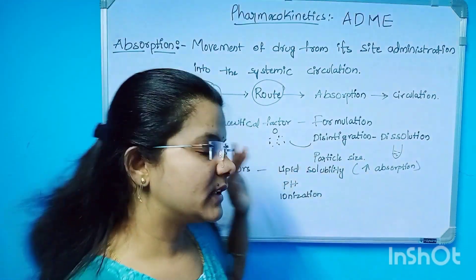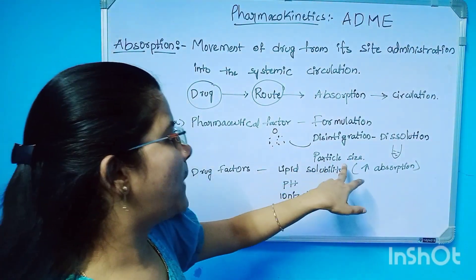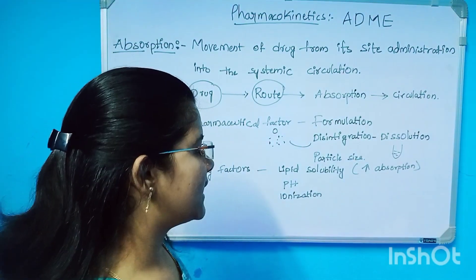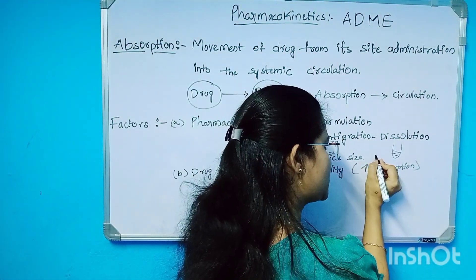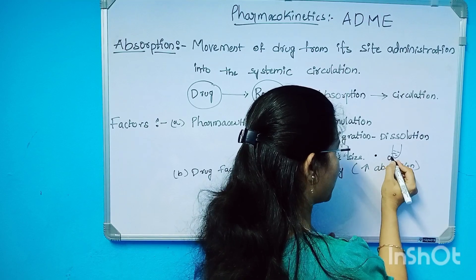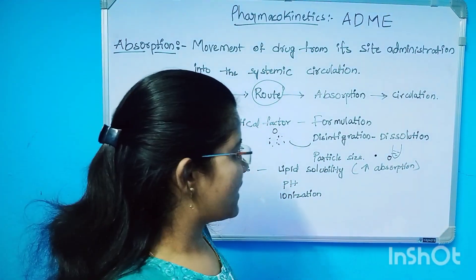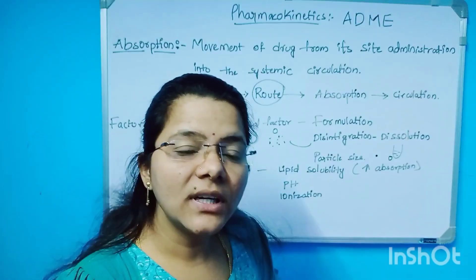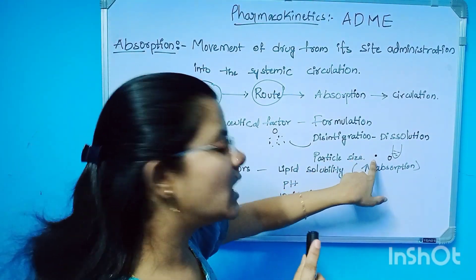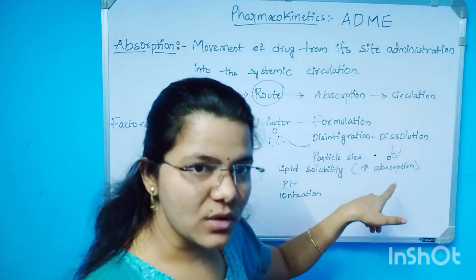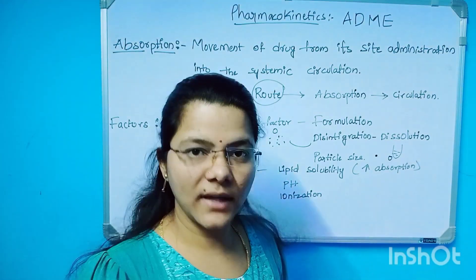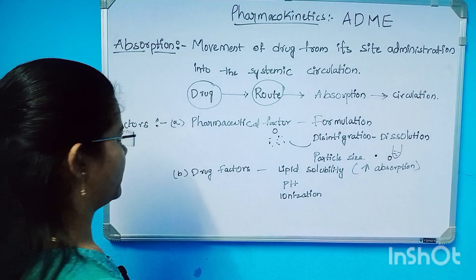The disintegration and dissolution factor influences absorption through particle size, which affects the absorption factor. Particle size also affects the surface area — a smaller particle has a larger surface area relative to its size, which influences absorption.